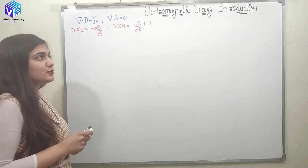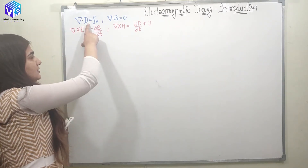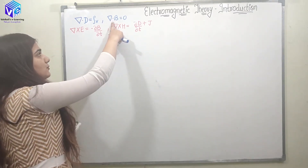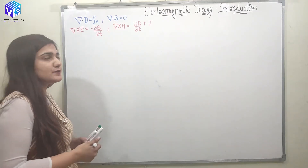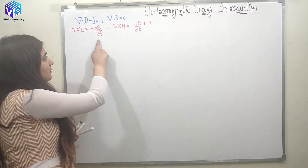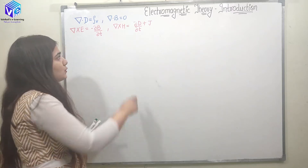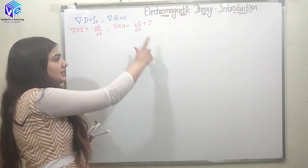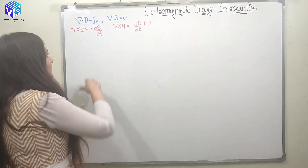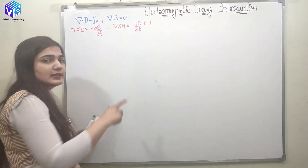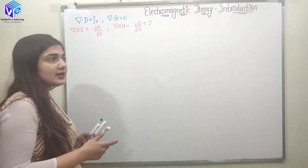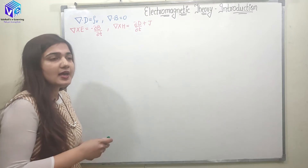So these are my four Maxwell's equations. The first Maxwell's equation says ∇·D = ρ_v, where ρ_v is the volume charge density. The second Maxwell's equation says ∇·B = 0. According to the third Maxwell's equation, ∇×E = −∂B/∂t, and according to the fourth, ∇×H = ∂D/∂t + J. Here, E is the electric field intensity, H is the magnetic field intensity, D is the electric flux density, B is the magnetic flux density, and J is the current density.